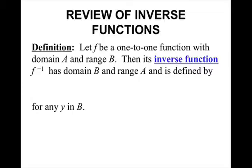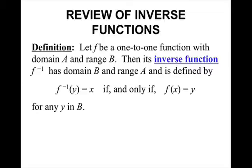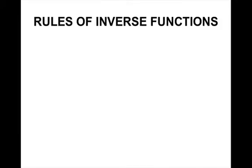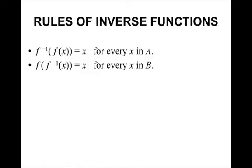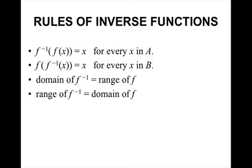Let f be a one-to-one function with domain A and range B. Then its inverse function f⁻¹ has domain B and range A, and is defined by f⁻¹(y) = x if and only if f(x) = y for any y in B. Rules: f⁻¹(f(x)) = x for every x in A, and f(f⁻¹(x)) = x for every x in B. The domain of f⁻¹ is the range of f, and the range of f⁻¹ is the domain of f.